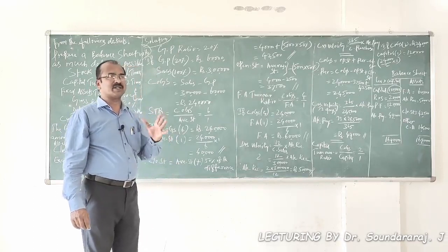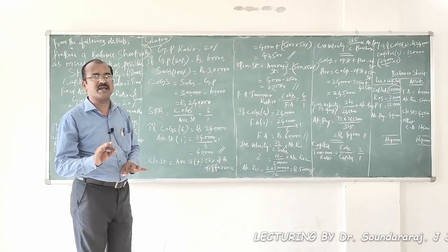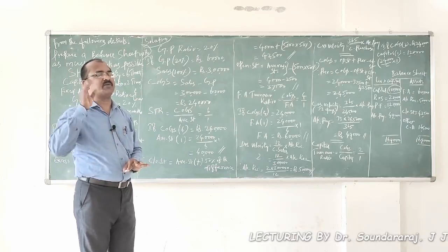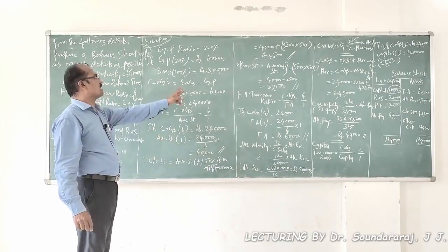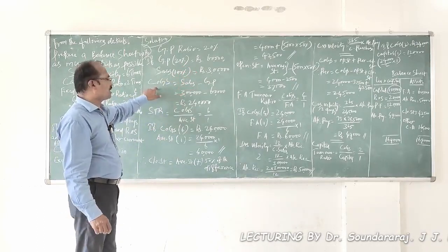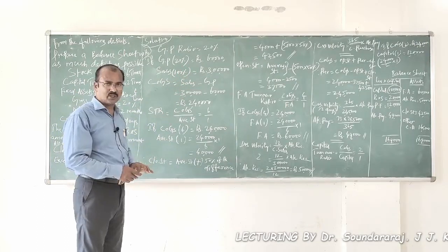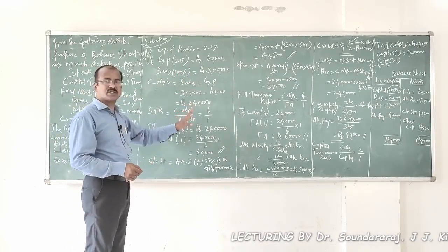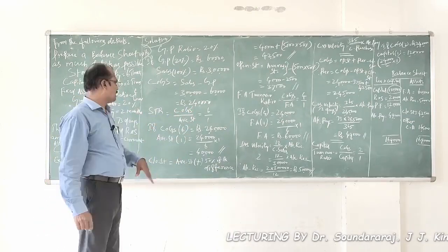...and the percentage on sales is 20%, the value of sales with 100% weightage is 3,00,000 rupees. Now knowing sales and gross profit, we calculate cost of goods sold: Sales minus Gross Profit = 3,00,000 − 60,000 = 2,40,000 rupees cost of goods sold.